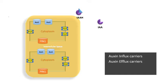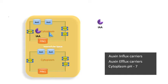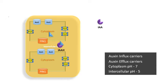The IAAH form can readily diffuse inside the plant's cytoplasm without involvement of any auxin influx carriers. In the cytoplasm, the pH is 7, and at this pH the IAAH dissociates into IAA- and H+. This IAA- then takes the journey through the PIN auxin efflux carrier into the intercellular space. The intercellular space has a pH of 5, and because this pH is acidic, the IAA- associates with H+ and they form IAAH again.